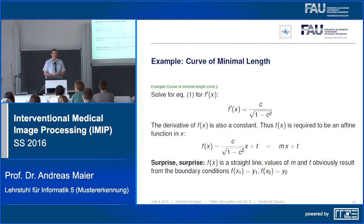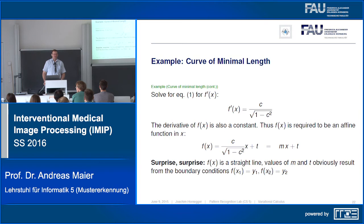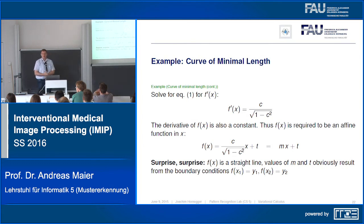This is why variational calculus is so useful — we could actually prove that the shortest distance between two points is a line. This also works for any other distance measure; for example, you can compute the shortest connection between two points on a curved surface.